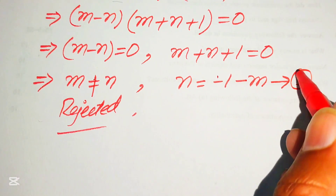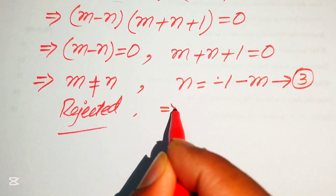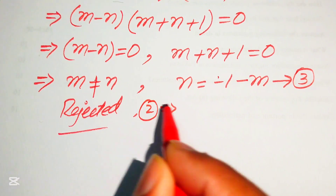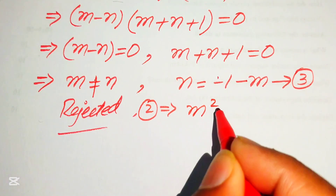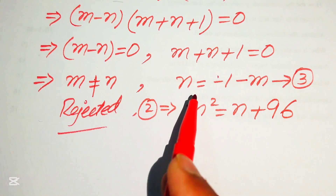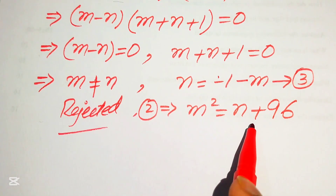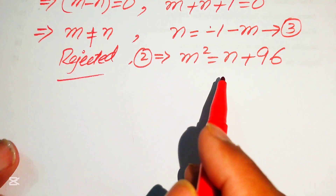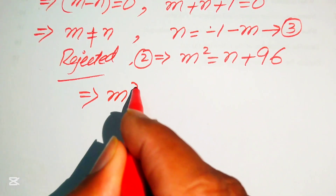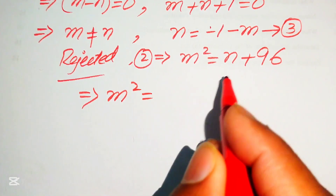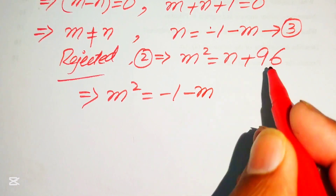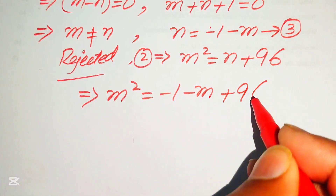We copy down equation 1: m² = n + 96. We substitute the value of n from equation 3 into this equation, giving us m² = (-1 - m) + 96.